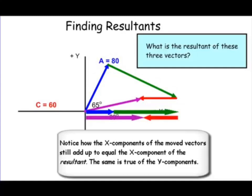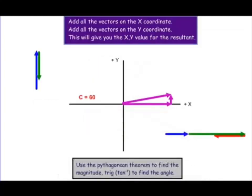I did it graphically using the head-to-tail method, and I also did it graphically using the sum of the vectors in the x direction — the x components — and the sum of the y components to define the resultant. Let's go ahead and use actual numbers now.